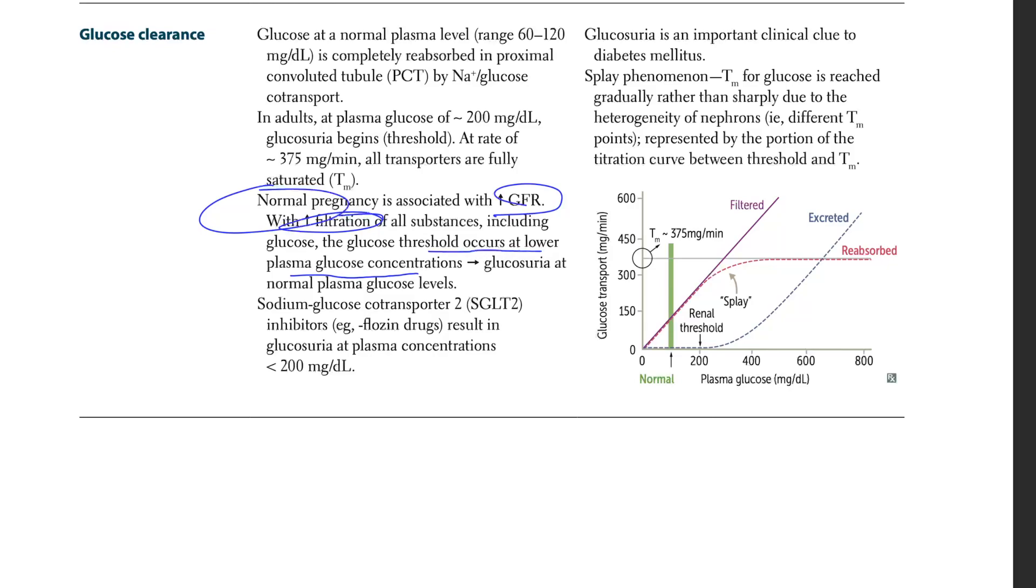In pregnancy, you have increased GFR with increase in filtration. The glucose threshold occurs at lower plasma concentration now. Why? Because you have glucose coming so much most of the time for filtration. By increasing GFR, increasing filtration, these transporters get saturated before even they hit 375. So because they get saturated, those pregnant women become, they go into glycosuria at normal plasma glucose levels.